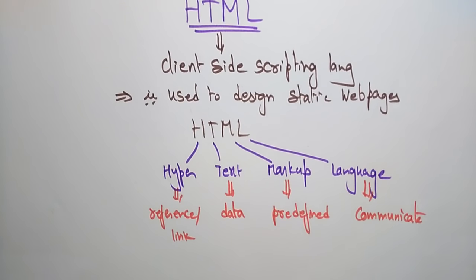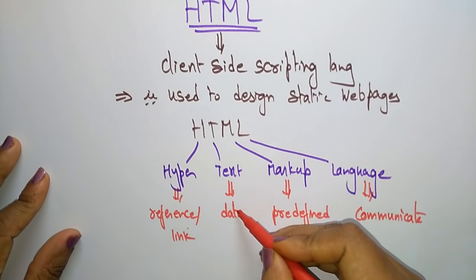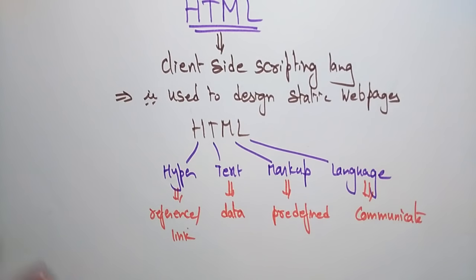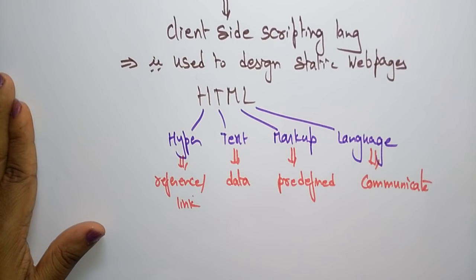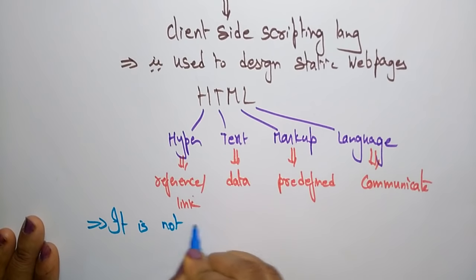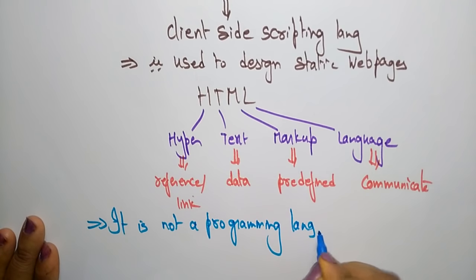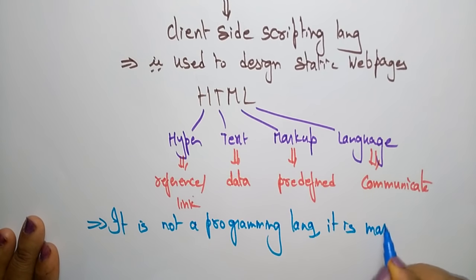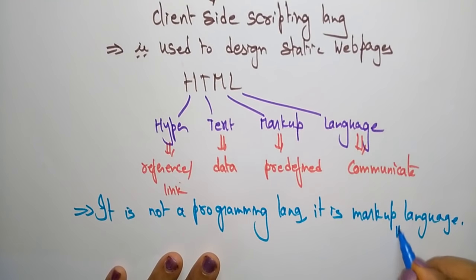So whenever you are asked what is HTML: HTML is a Hyper Text Markup Language. Hyper means reference/link, Text is data, Markup is predefined, and Language is nothing but communication. HTML is not a programming language — just like Java or C — it is a markup language, we call it a markup language.